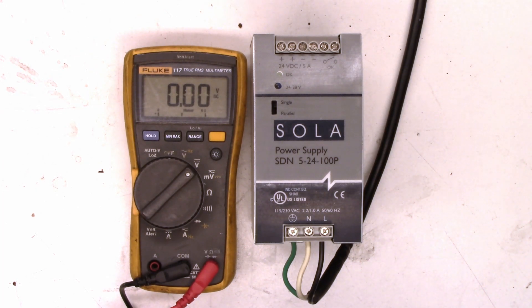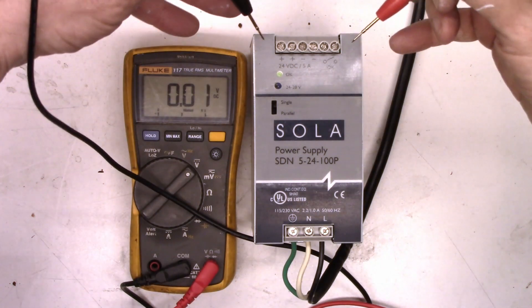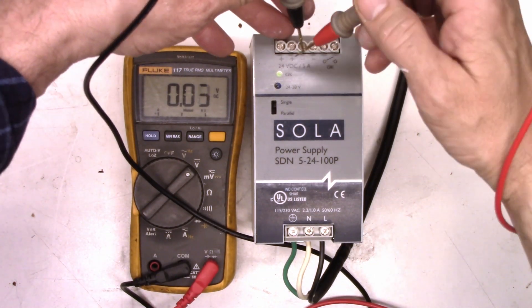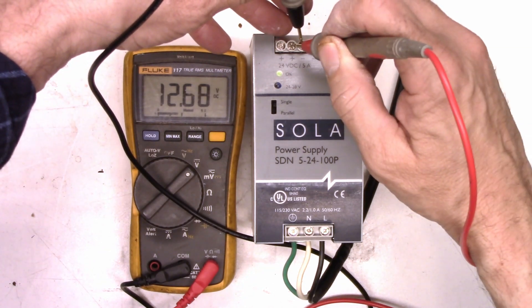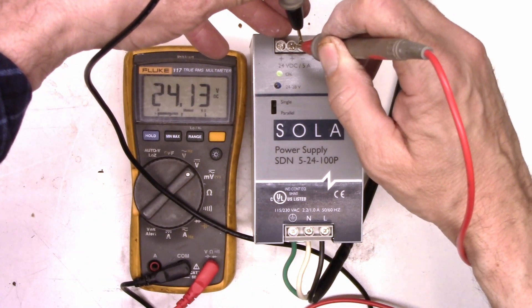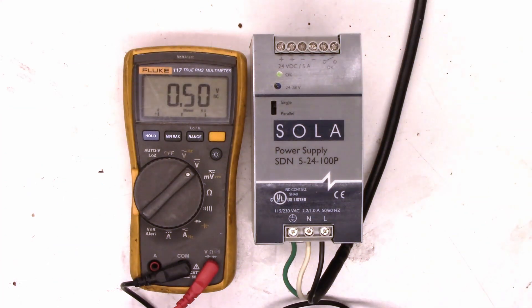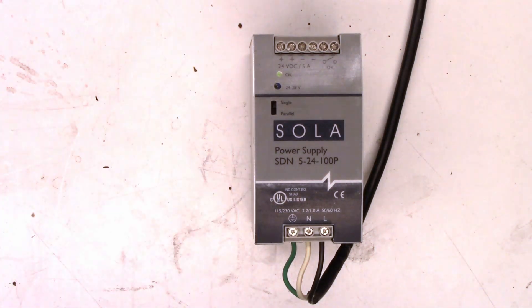Green light came on. Let's measure the voltage. 24.13 volts. That looks good.